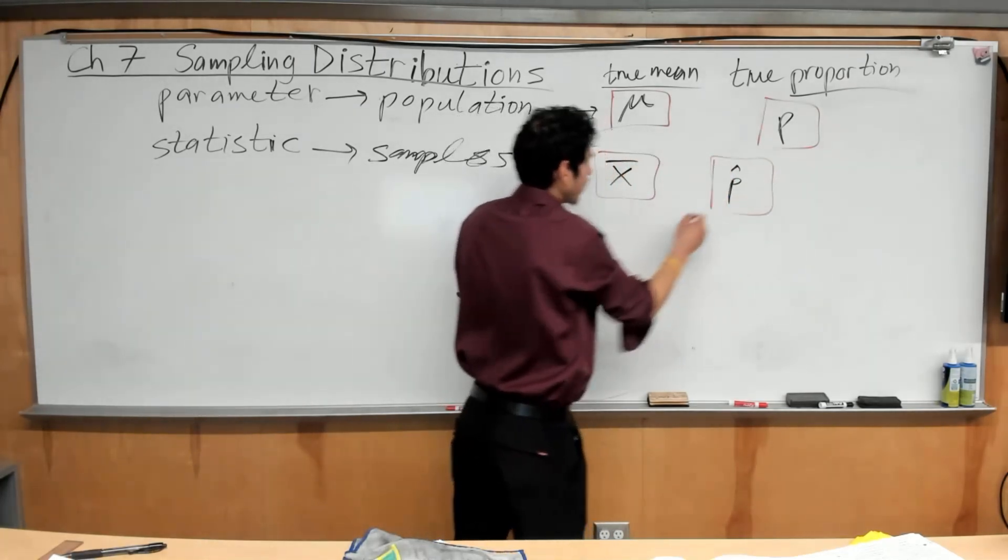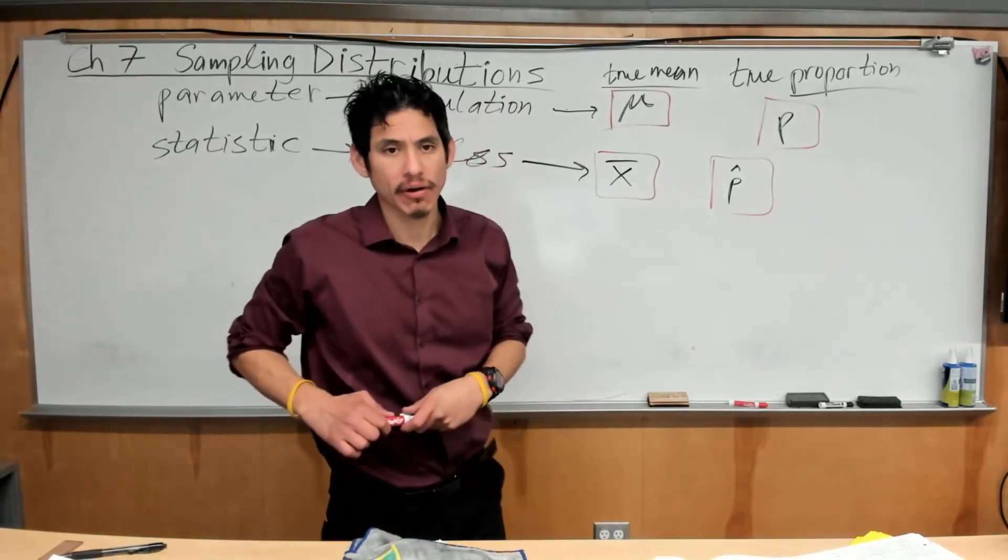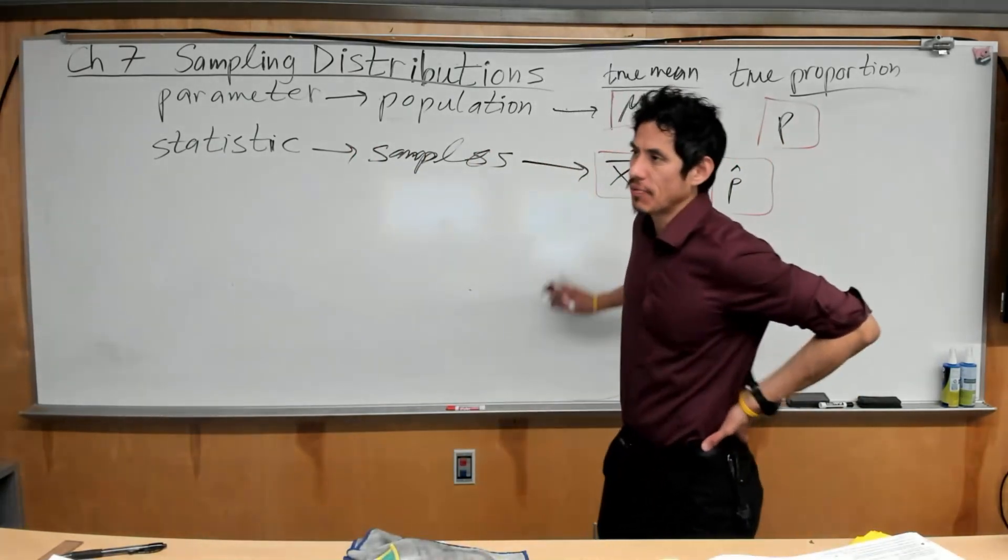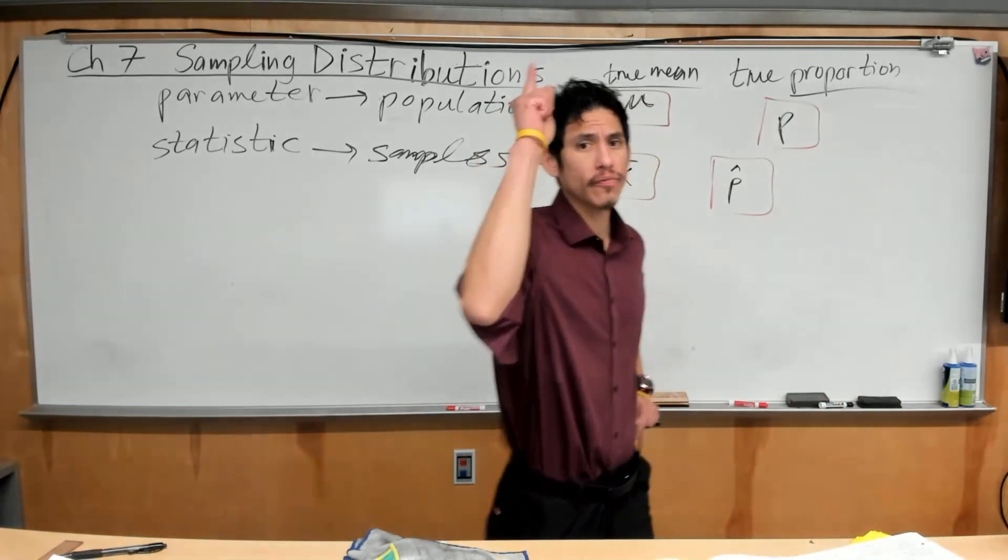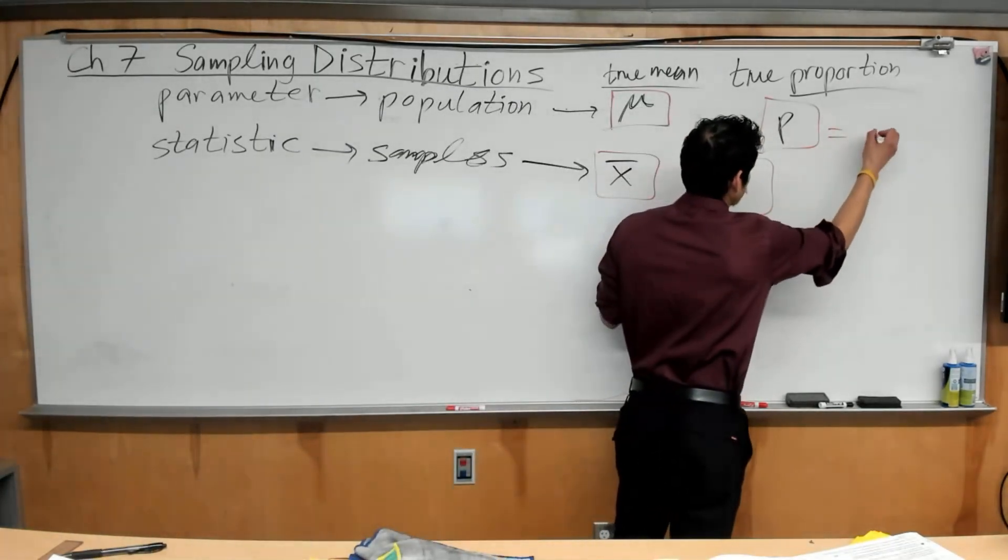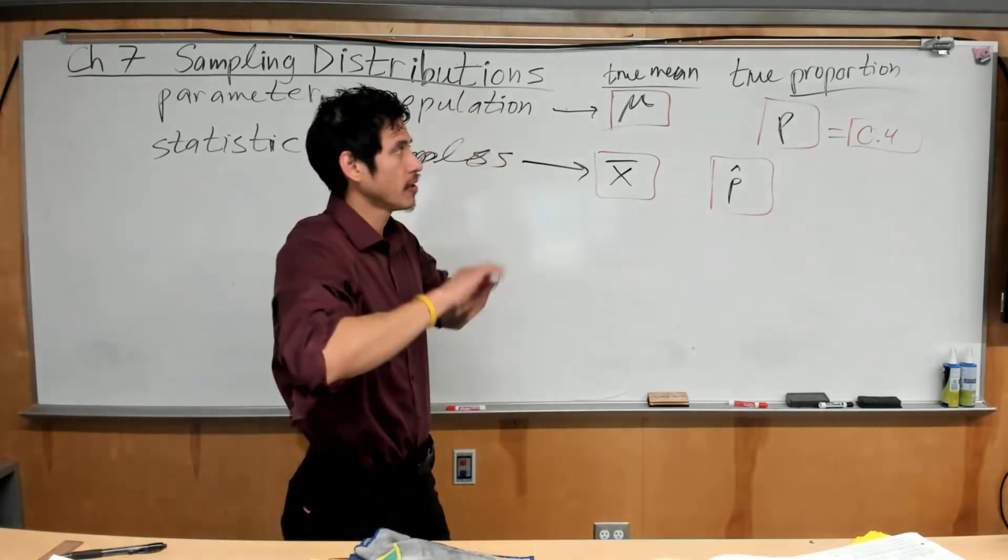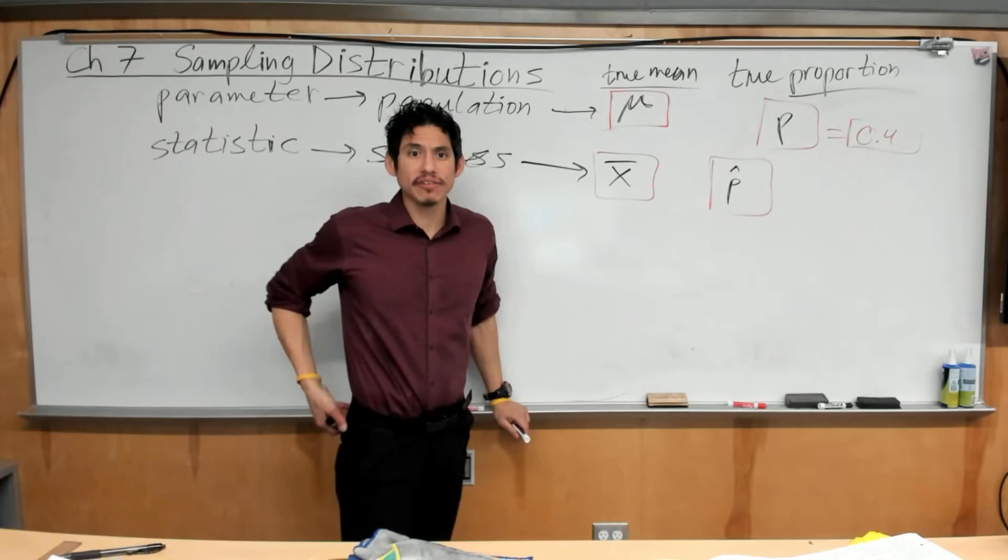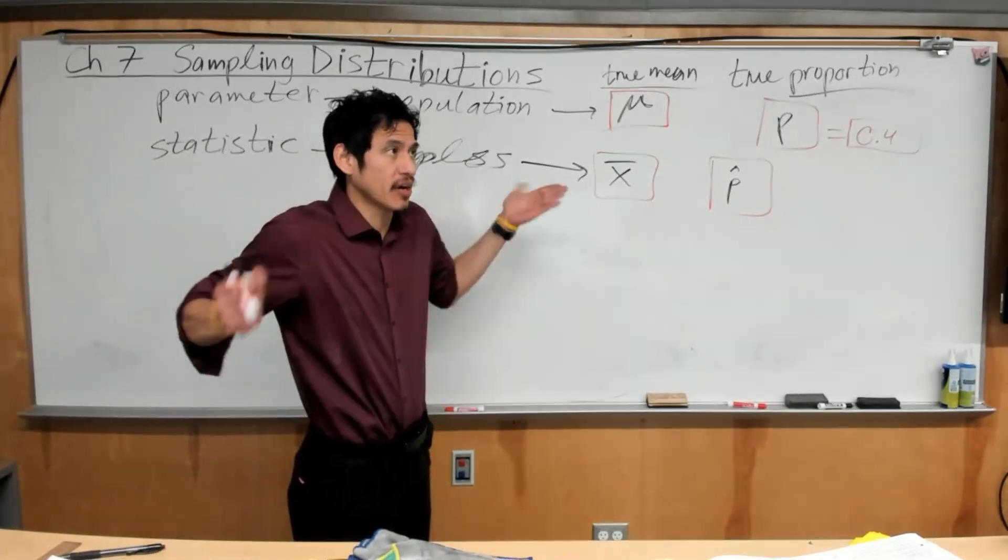So x-bar and p-hat refer to samples, sample mean, sample proportions. Now, using this example again that you want to figure out what proportion of high school students try weed before graduating, there's only one true value of the proportion. Let's say maybe it's 40%. So the true proportion is 0.40. There's only one true value. Now, when it comes to statistics, there could be thousands and thousands, because the statistics will vary based on who you sample and based on how big the groups are.